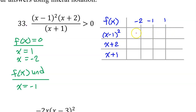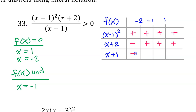X minus one squared will be positive in every interval, because when you square even a negative number it becomes positive. X plus two equals zero at negative two — negative to the left and positive to the right. X plus one equals zero at negative one — negative to the left and positive to the right. The overall sign of f of x will be positive in the first interval (even number of negatives), negative in the next interval (odd number of negatives), and positive in the last two intervals.